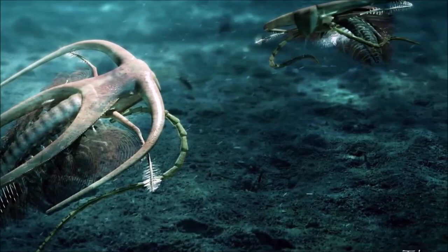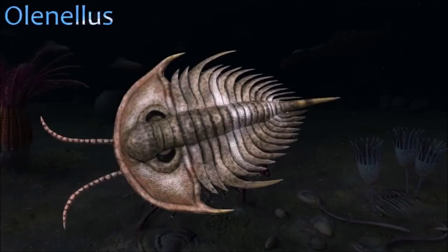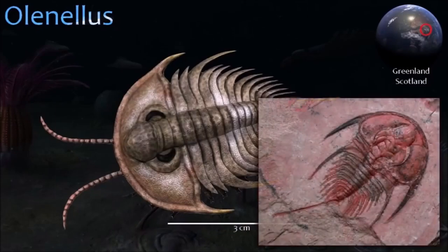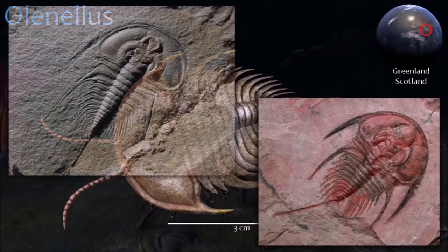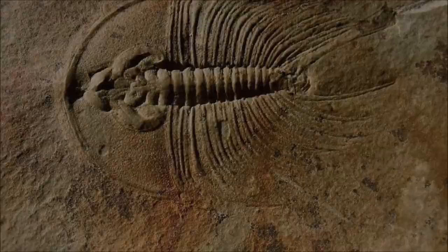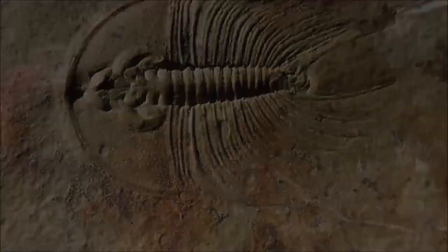Olenellus was a trilobite with a semicircular head shield and a tapering glabella with four pairs of backward-pointing furrows; its crescent-shaped eyes merged with the glabella's frontal lobe, and its thorax had 18 segments, the third wider and longer than the others, ending in a spine. One of the earliest trilobites in the geological record, Olenellus was a key fossil used by Canadian geologist Tuzo Wilson to show that there was once a proto-Atlantic ocean separating much of continental North America and Western Europe.